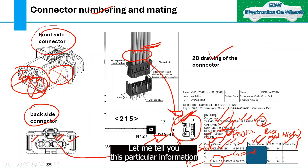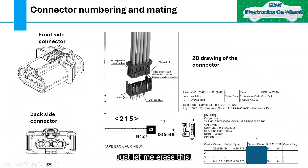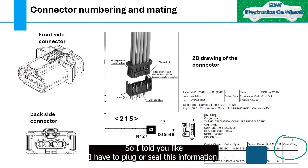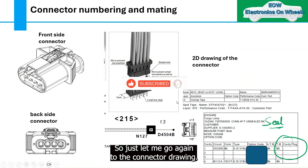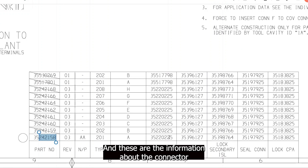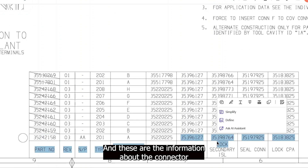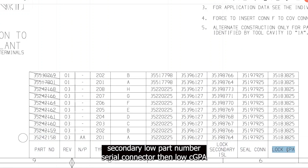Now let me show you how to get information like cavity, plug, or seal from the connector part number drawing. Going back to the connector drawing, you can see the part numbers and information about the connector: secondary lock part number, seal, connector lock, CPA, and so on.